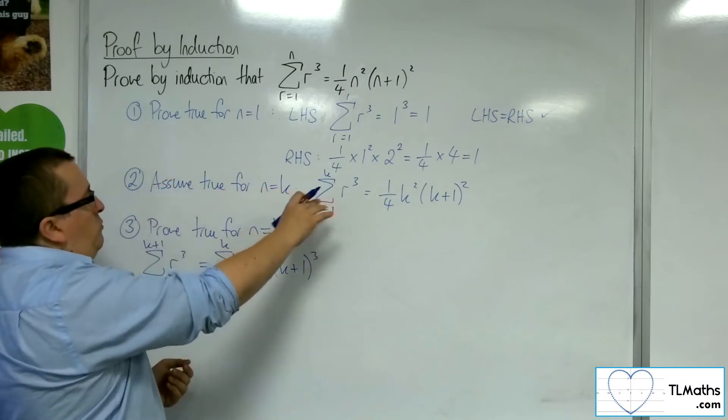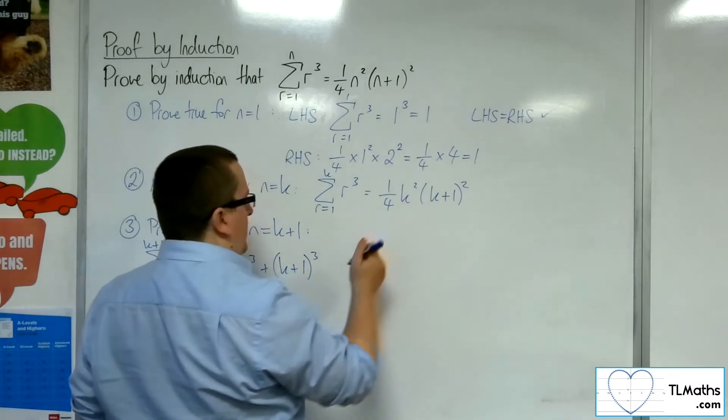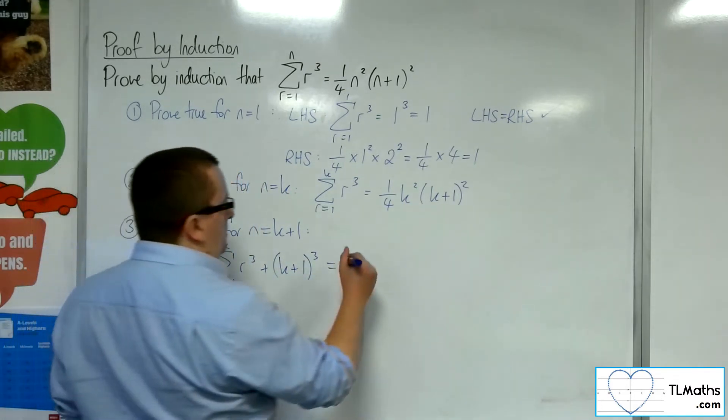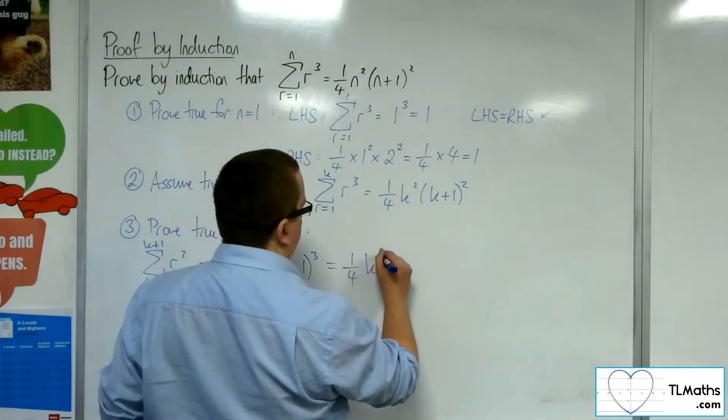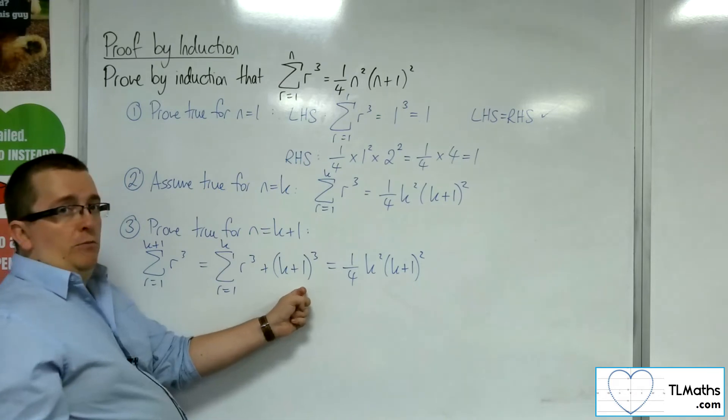Now, seeing as I've assumed true for n equals k, this summation I can replace with this 1 quarter k squared times k plus 1 squared. And I've got that k plus 1 cubed on the end there.